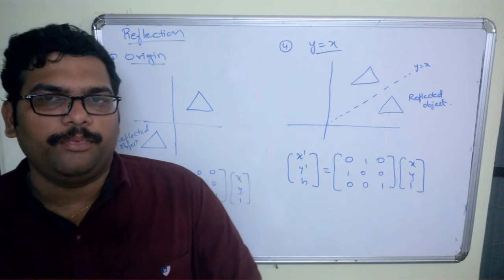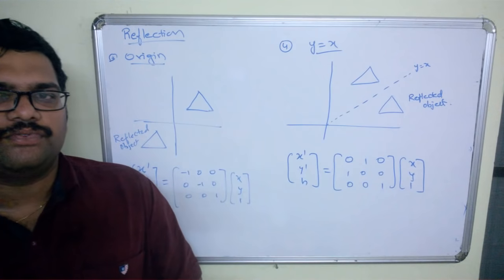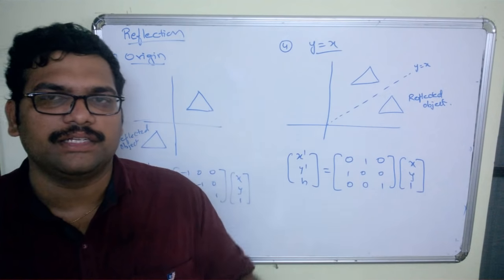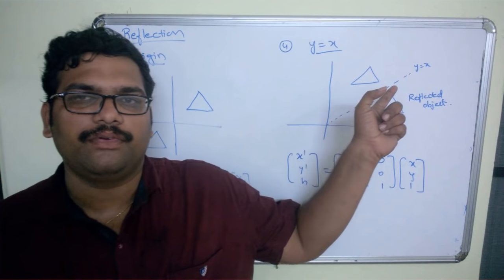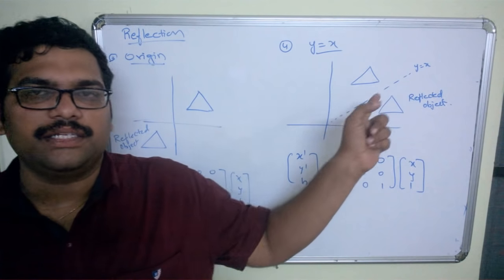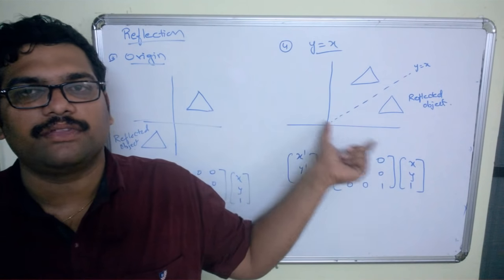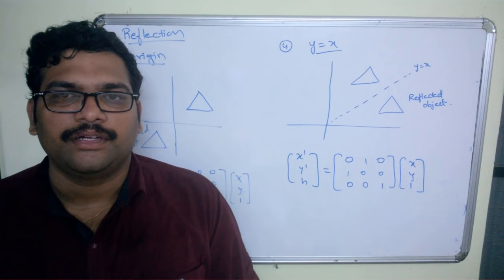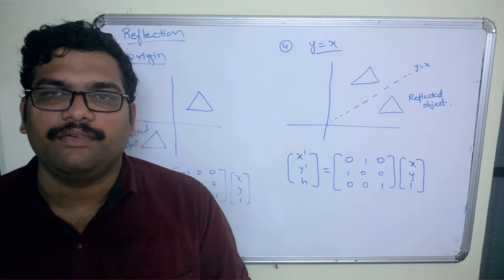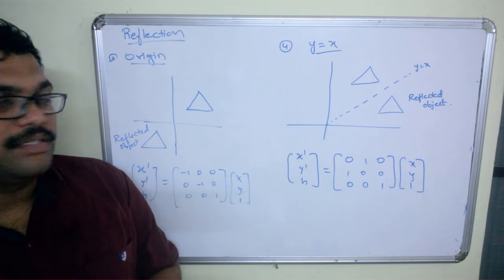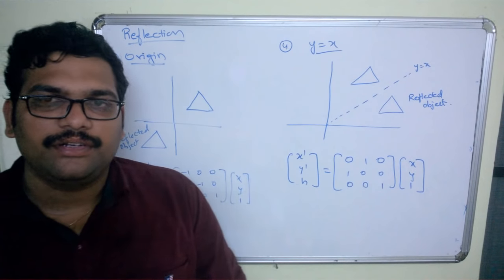I hope you understood the first example — reflection along the x-axis — and the same procedure applies for all remaining cases. Consider the same triangle and solve it for all the cases to observe the perfect reflection of an object. Let us stop here in this session; in the next session I will explain composite transformations. Hope you understood today's session. Thank you.